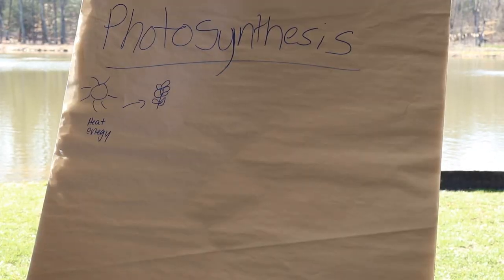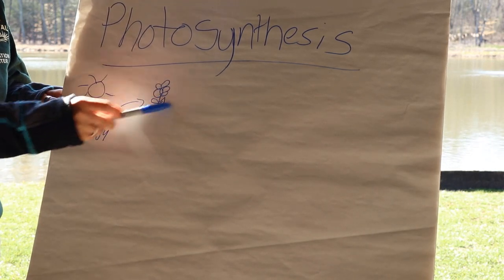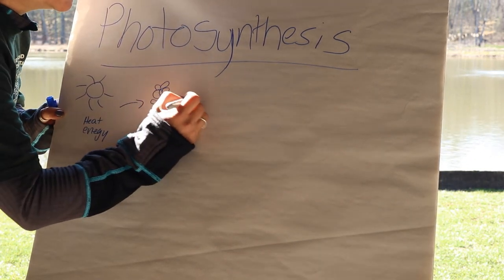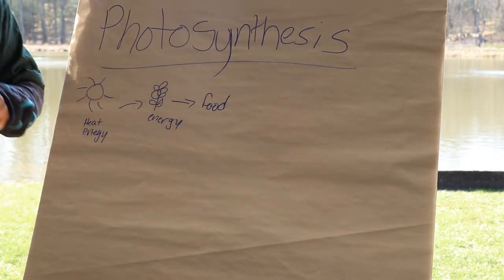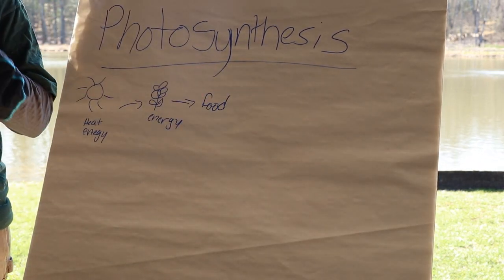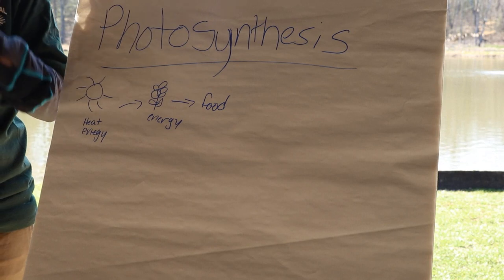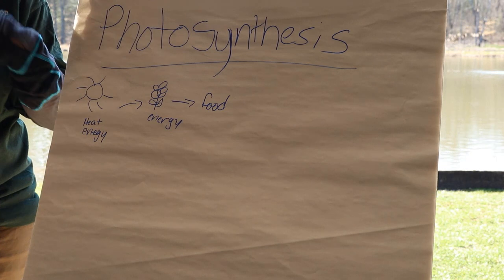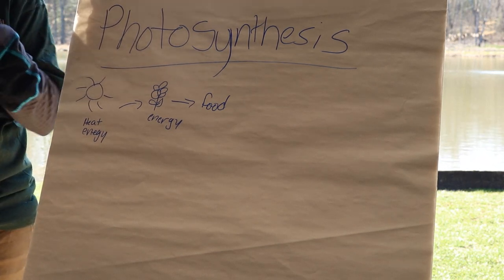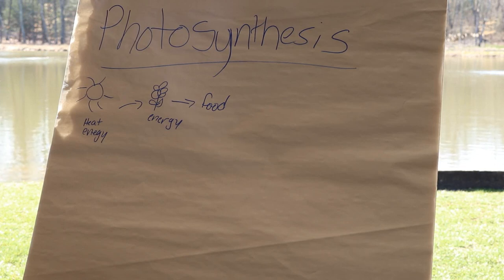Photosynthesis is when plants take the sun's heat and energy, it goes into the plant, and then the plant uses that energy to make its own food. It will change water and carbon dioxide into sugars to feed itself. Do we as humans make our own food? No, we don't. We may prepare or cook our own food, but we don't actually make it within our own bodies. We use plants and animals to make our energy.